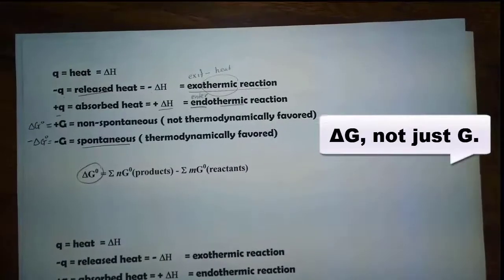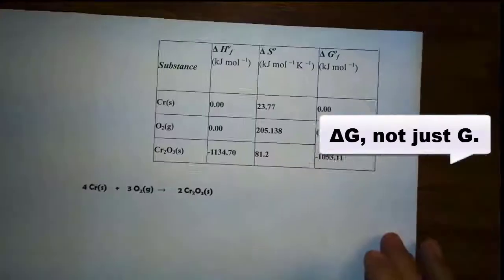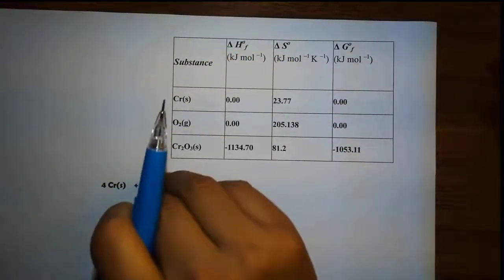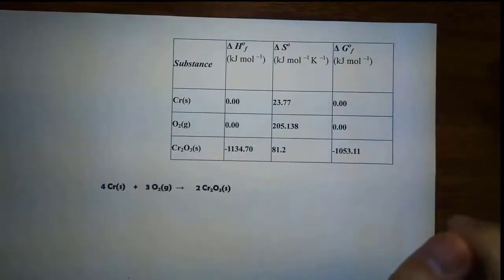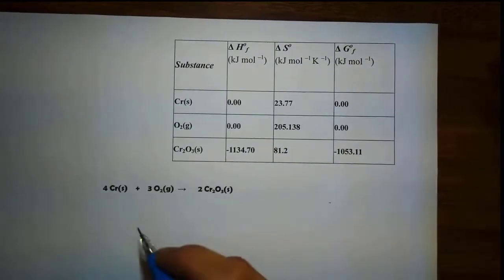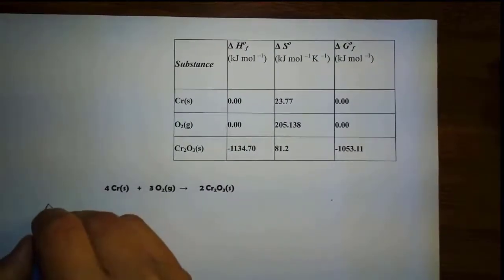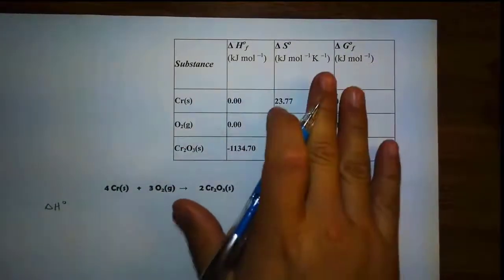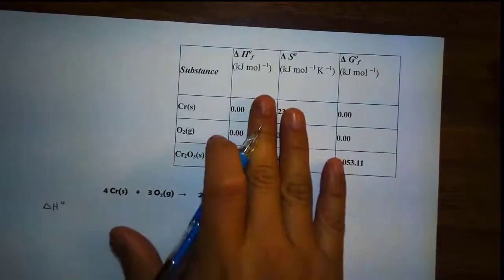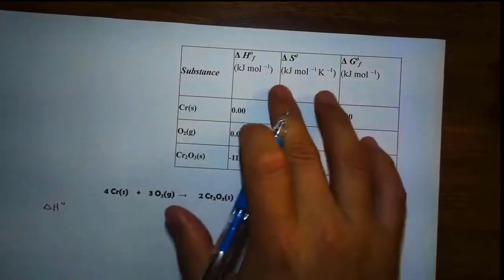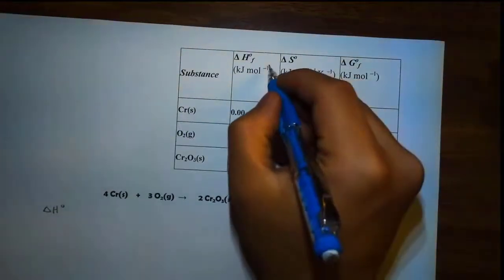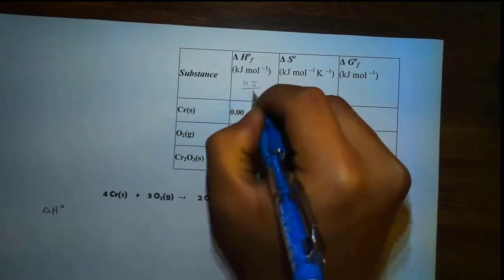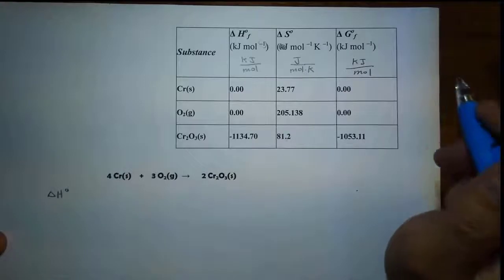Let's solve one problem together. I'm going to solve for delta H, delta S, and delta G. Let's look for delta H naught. They give us a table where we have to look at the units for each specific thing. Notice we have the negative, and the unit is kJ over mole.